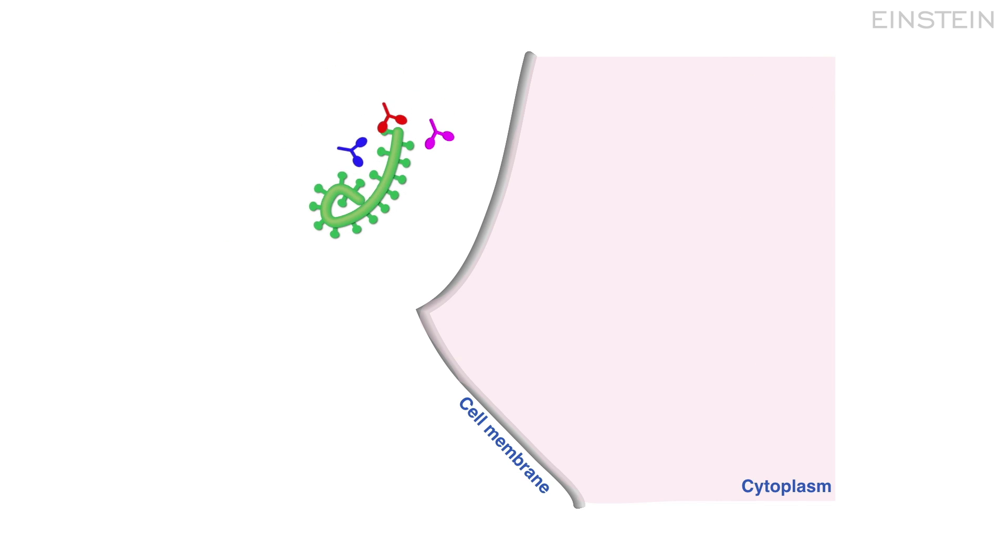In the case of ZMAP, we know that the three different antibodies grab onto the outside surface of the virus before it can enter the cell, and this allows the virus to be destroyed.